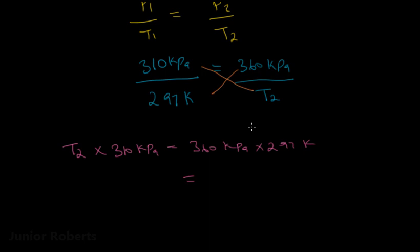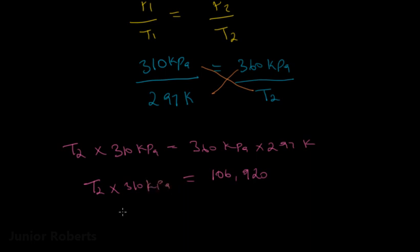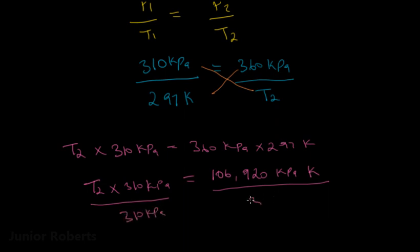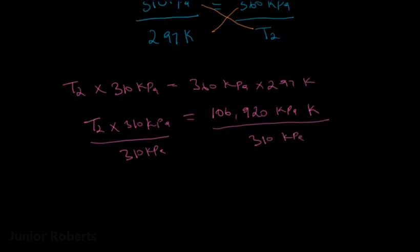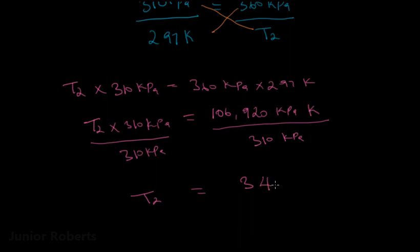Multiplying 360 by 297 gives 106,920 kilopascals·Kelvin. Dividing both sides by 310 kilopascals, we find that T2 equals 345 Kelvin. Converting to Celsius by subtracting 273 gives a final temperature of 75 degrees Celsius.